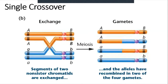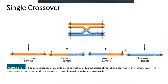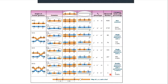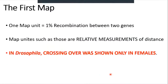Single crossing over: if crossing over happens between two homologous chromosomes, two sister chromatids exchange their parts and we get new combinations after meiosis. Two of the sister chromatids never participate in crossing over, but the other two do. There is also the possibility of double crossing over, which can produce even more different combinations.